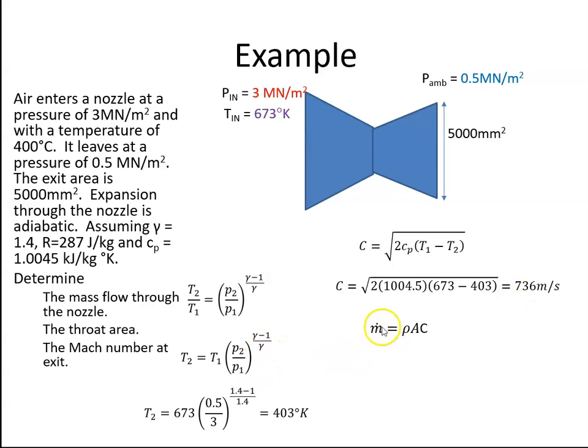Mass flow is ρAC. We have the area and the velocity, so we need to get the density. Density is pressure over RT. The pressure is 500,000 N/m², R is a constant of 287, the temperature is 403, so it gives me a density of 4.3 kg/m³.